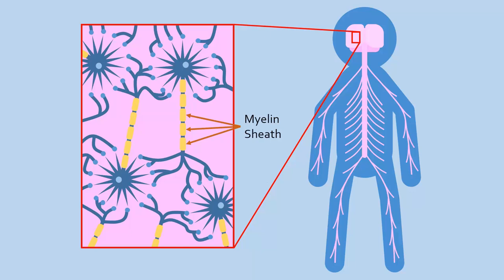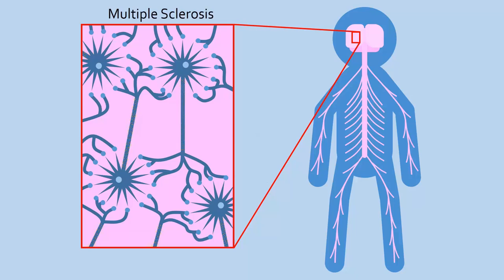What happens when this myelin is damaged, such as in the disease known as multiple sclerosis? To answer that question, we first need to understand how signals move within a neuron.